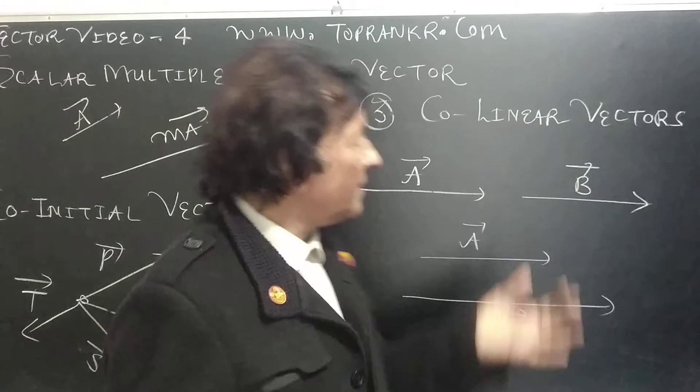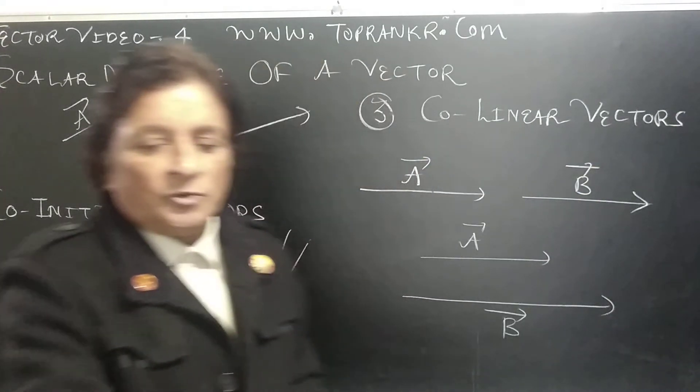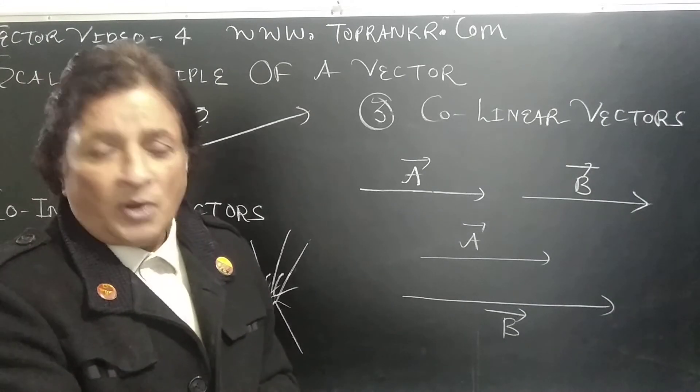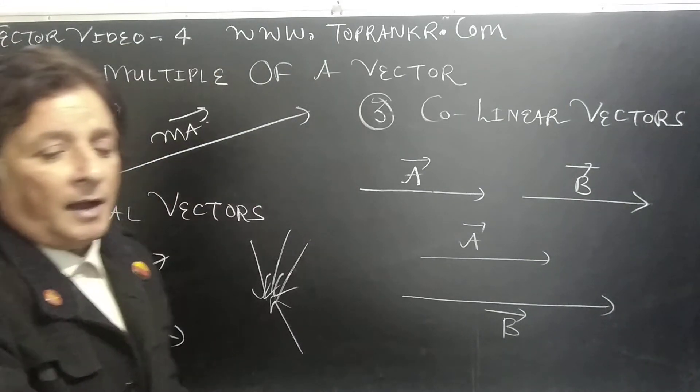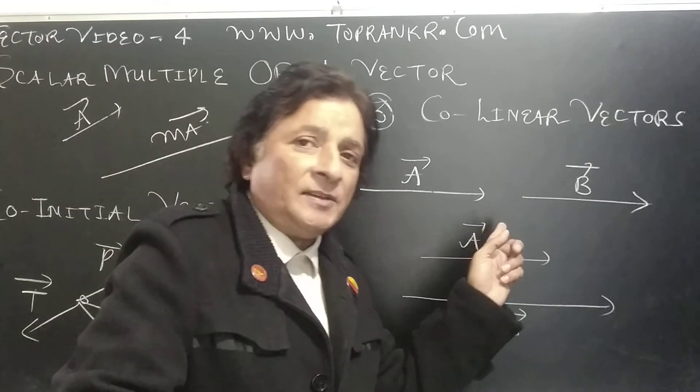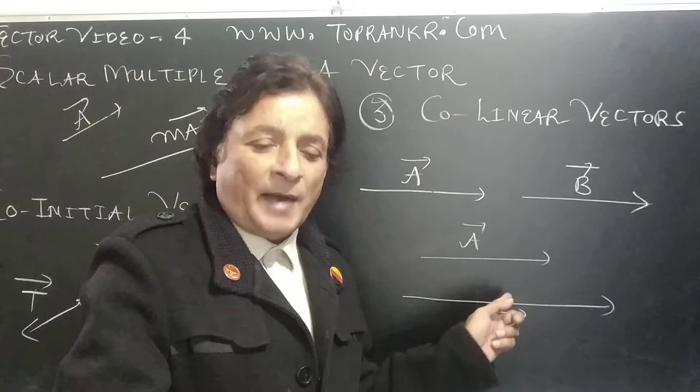Then co-linear vectors. What is co-linear vectors? Two vectors which either are along the same line or along two parallel lines are called co-linear vectors.